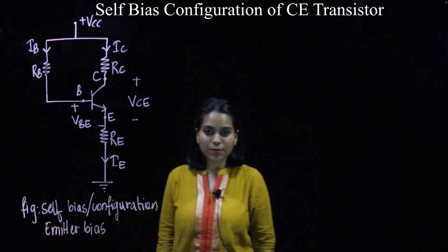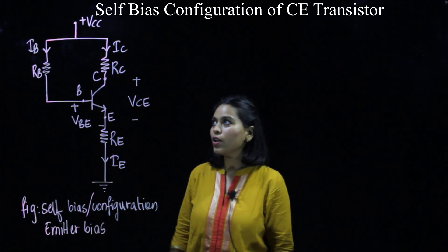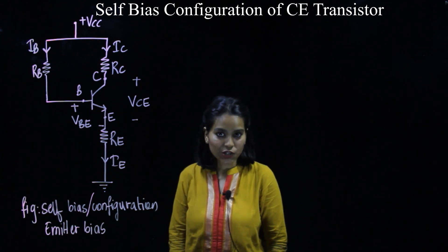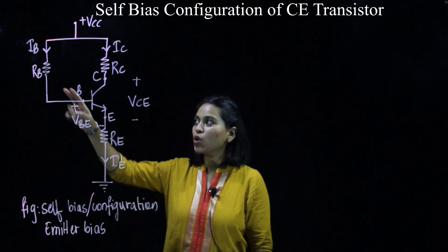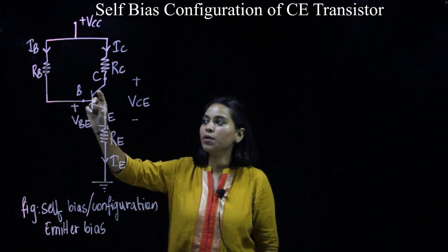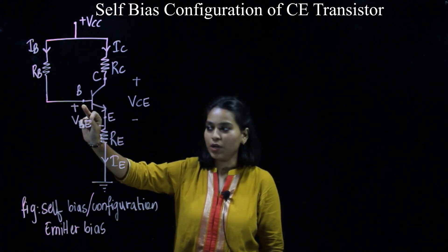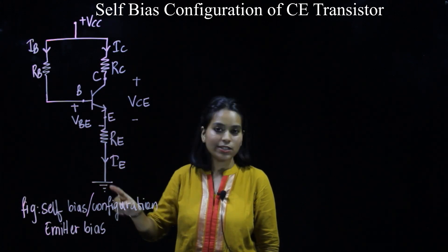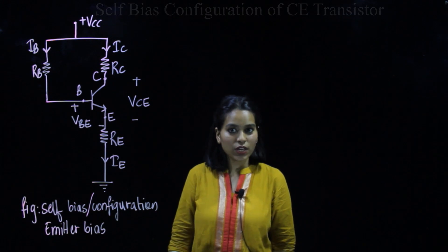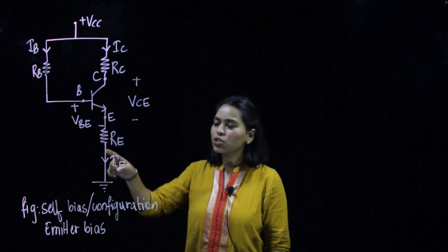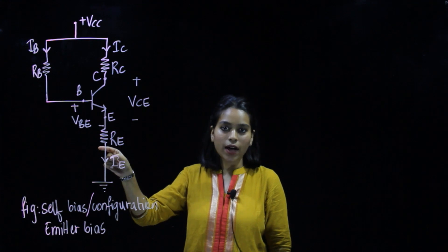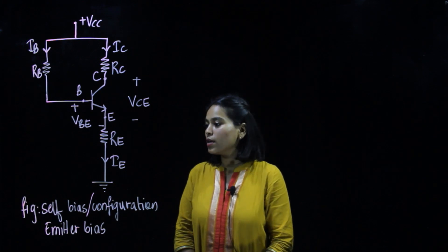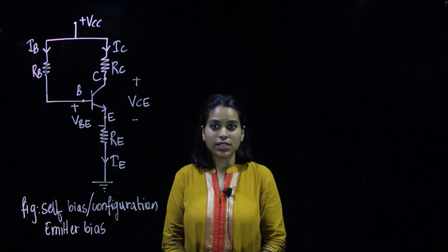If you remember fixed bias configuration, resistor RC is common in all three configuration circuits. In fixed bias we also had resistor RB present at the base terminal, but in the emitter terminal there was no resistor — it was directly connected to ground. Now in self-bias configuration, the addition to the diagram is only a resistor RE, and everything else remains the same.